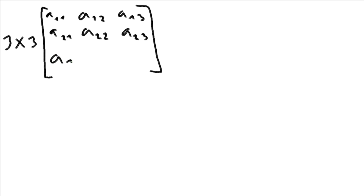We do the same for the second row and the third row. Once we do this we recognize that there are three rows and three entries for this three by three matrix, each entry denoted this way. Now we define something called an elementary product. An elementary product is any product of entries of the matrix such that no two entries come from the same row or the same column. There are n factorial elementary products for an n by n matrix.